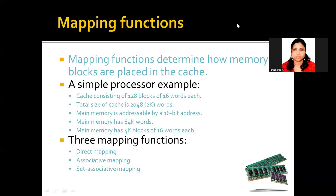Hi all. In this video lecture, let us see how data from the main memory can be mapped to the cache memory. We all know the size of the main memory is large when compared with the cache memory. Only a particular amount of data can be stored in the cache memory so that we can improve the speed of the processor. What data we can store and how it can be done — that is what we will be discussing in this lecture.